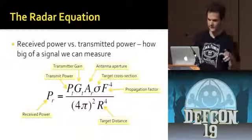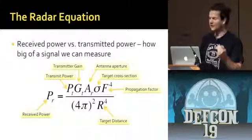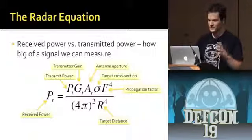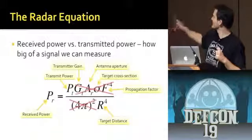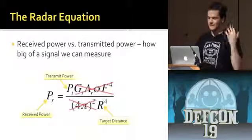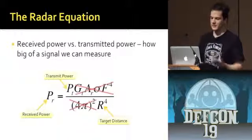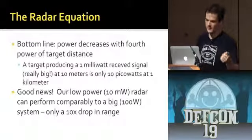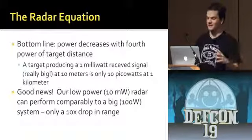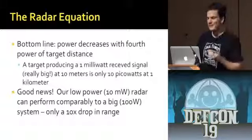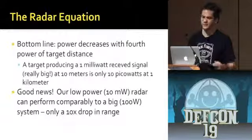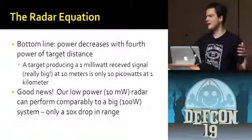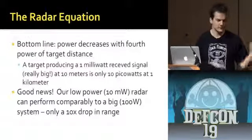Basically what we're looking at is the function of received power versus transmitted power. We've got transmitter gain, antenna aperture — which is like how big your dish is — cross section, and propagation factor. The main point I want to make is the target distance: we have power over R to the fourth. The received power decreases with the fourth power of the distance. So if you receive a signal of one milliwatt at ten meters, at a kilometer that's ten picowatts — really tiny. But this system uses about ten milliwatts of transmit power. That's only ten times worse than a hundred-watt radar the size of a car, so you can get a lot of performance with these low-cost simple systems.